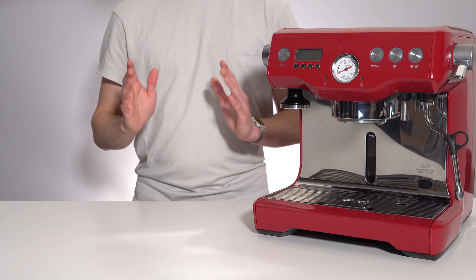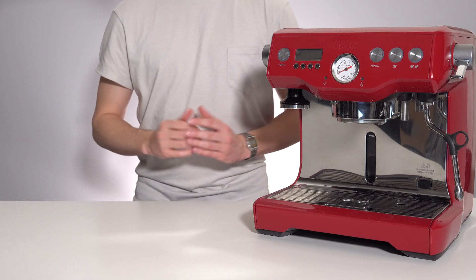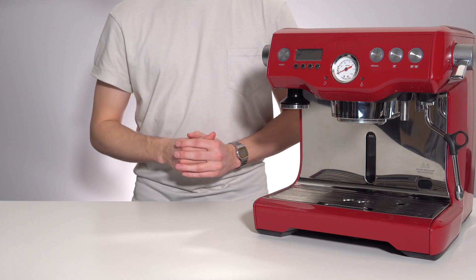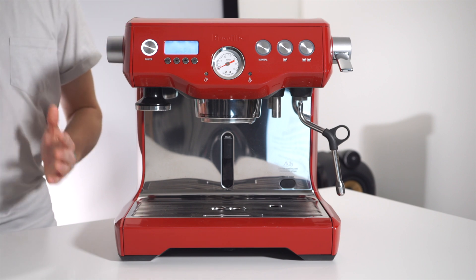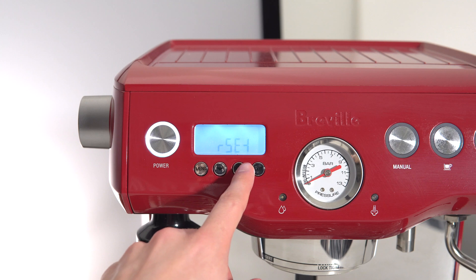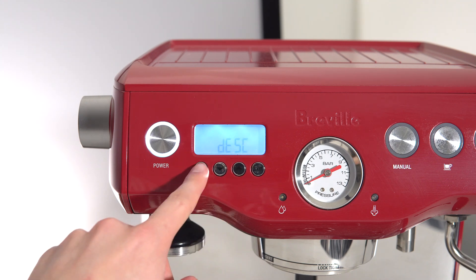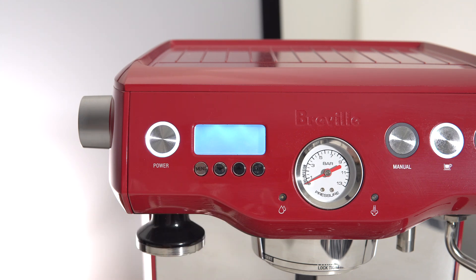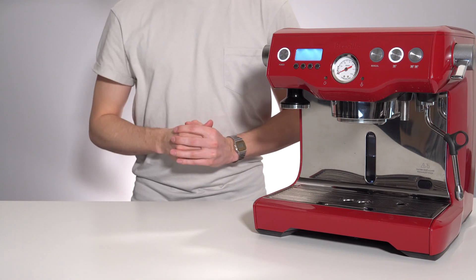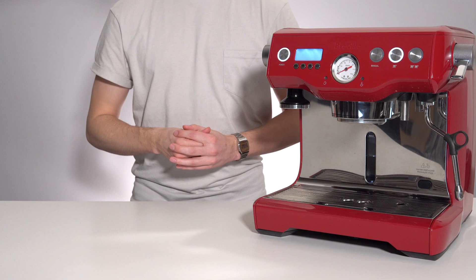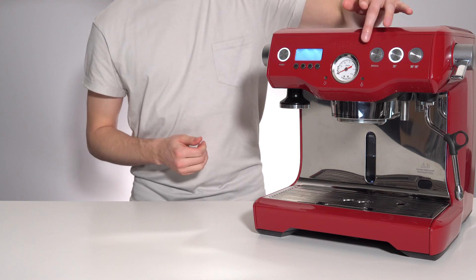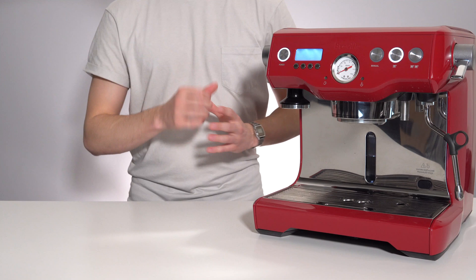Once your machine has cooled down for one whole hour, the next step is to press and hold the single shot button and then press the power button. This will take you into the advanced menu system. Use the arrow keys to select descale by pressing the menu button to accept. Once you hit the menu button to accept, you have now entered the descaling mode, and depending on which generation of machine you have, either the manual or the one shot button will be illuminated.